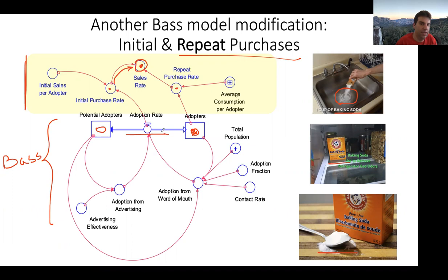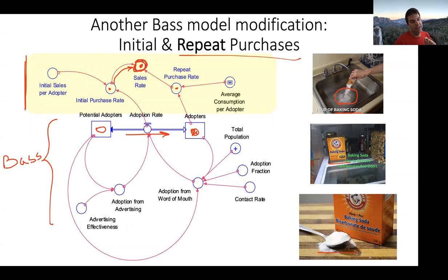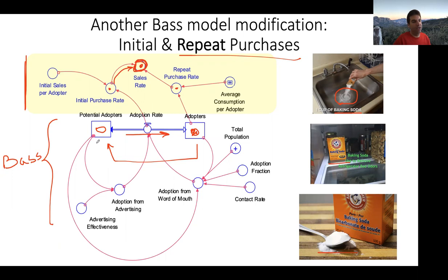For each adopter we say how many end up buying baking soda repeatedly, and that contributes to repeat sales. You could imagine a formula that combines initial sales from converting a potential adopter, and then say 50% of those go out and keep buying baking soda — for that 50% you model repeat sales. Plotting this thing on top would give your stakeholders a better idea of how much revenue you were getting. A student asked if this is similar to an SIRS model — an excellent question, which will be addressed in a couple of slides.